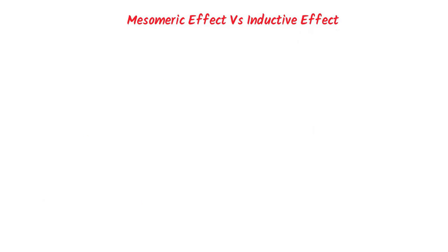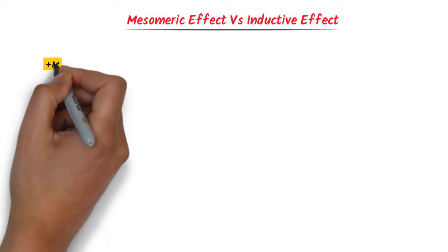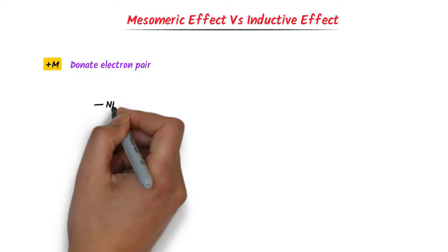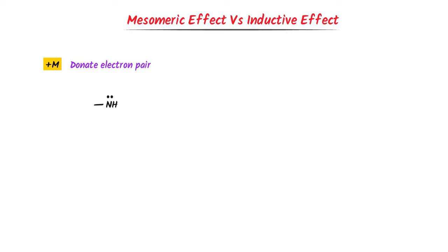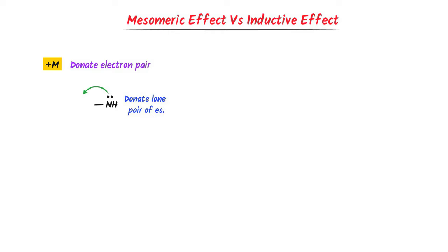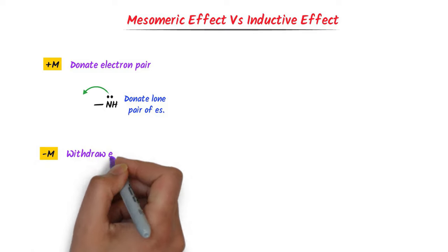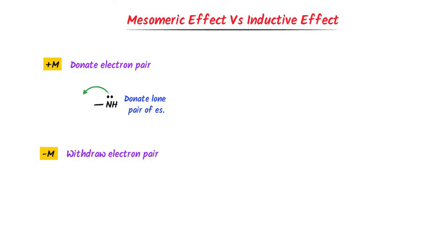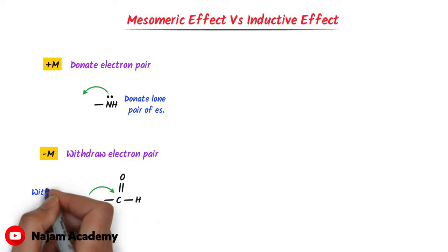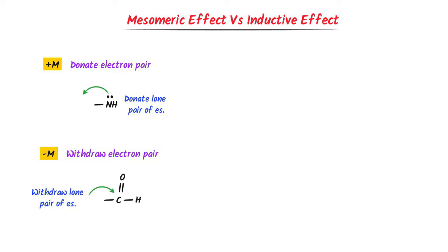Now let me teach you mesomeric effect versus inductive effect. We know that an electron-pair donating group is positive M effect. For example, the functional group NH2 has one lone pair of electrons and can donate this lone pair through resonance — so it is known as positive M effect. Secondly, an electron-pair withdrawing group is negative M effect. For example, the aldehyde group CHO withdraws electrons from the conjugated system through resonance — so it is known as negative M effect.